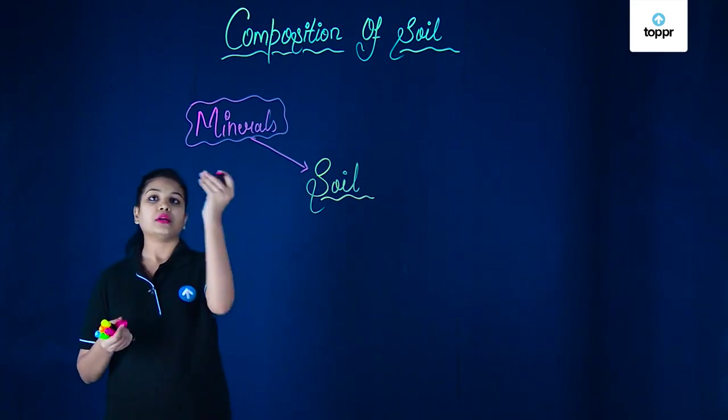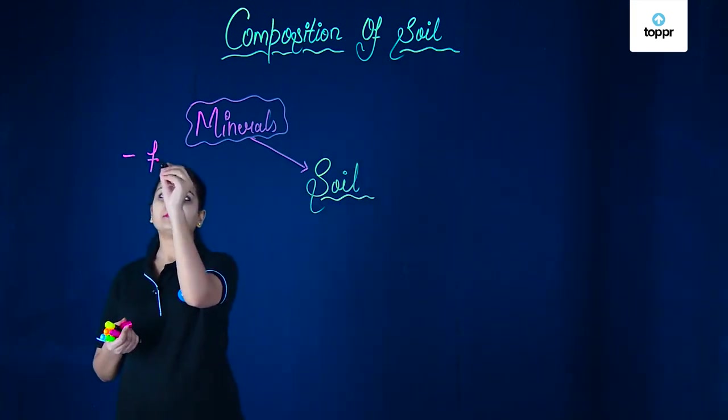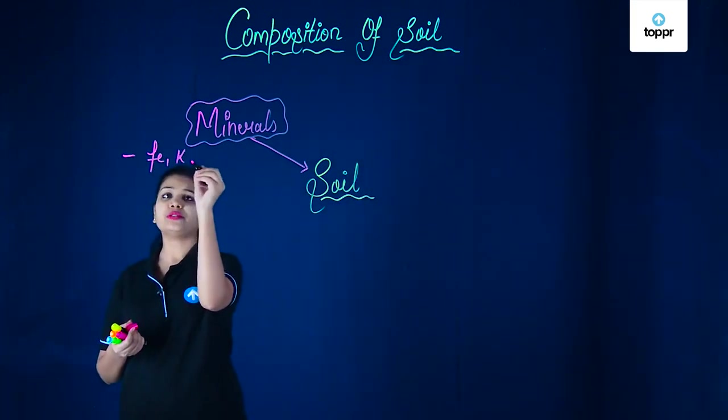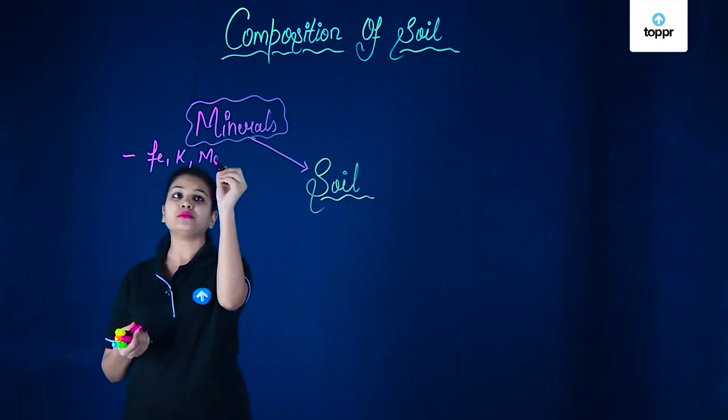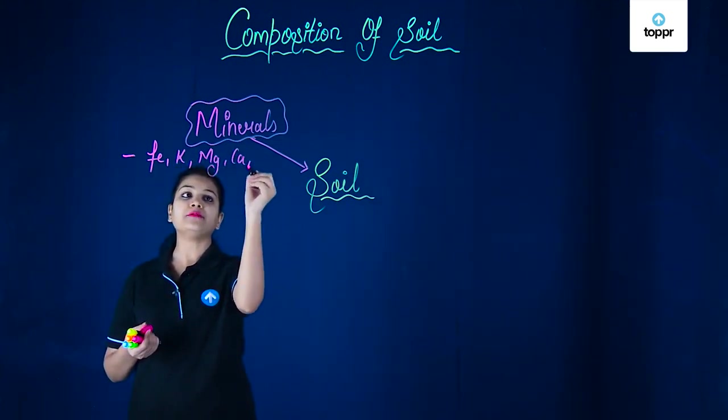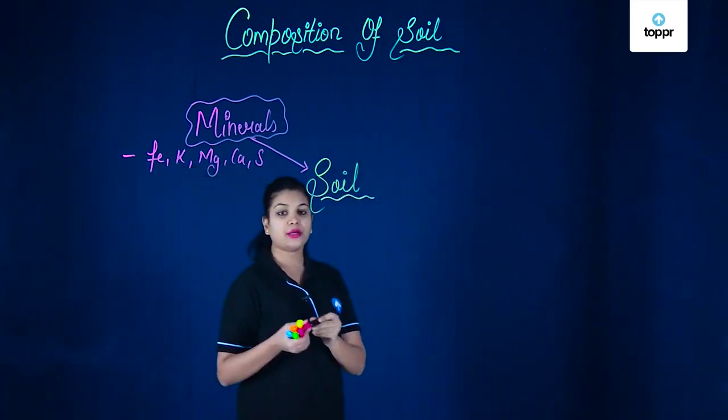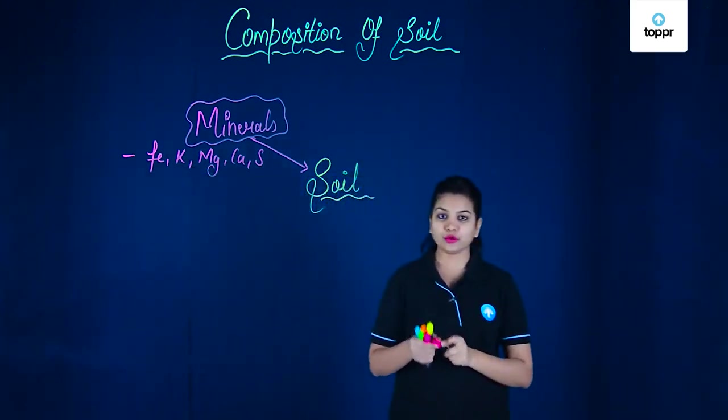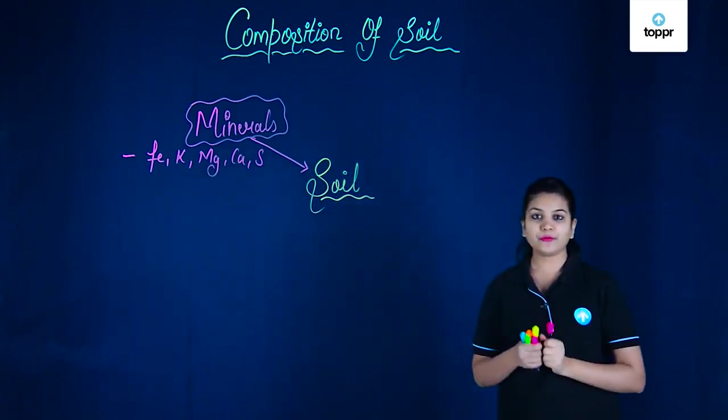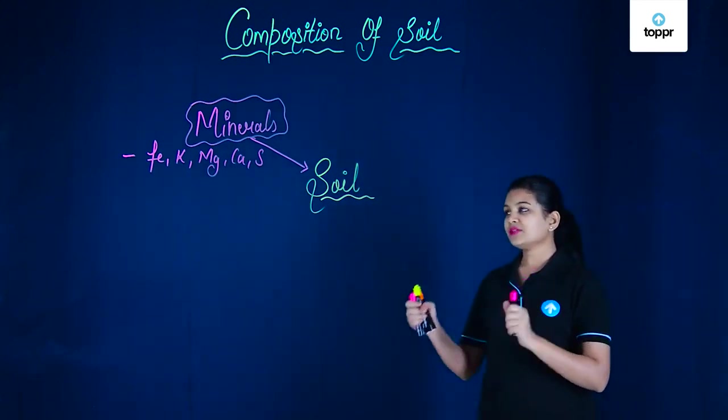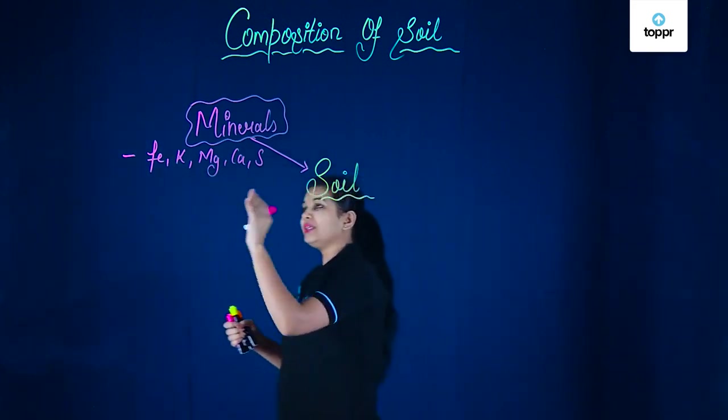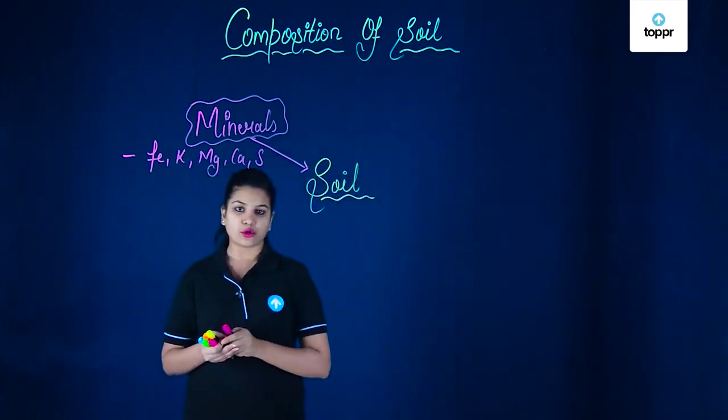Some of the most common examples of these minerals can be iron, potassium, magnesium, calcium, sulfur and many more. Some of these minerals are required by the plant for their proper growth and for the preparation of the food as well. So these are the minerals which form the primary part or the primary element of the formation of soil.